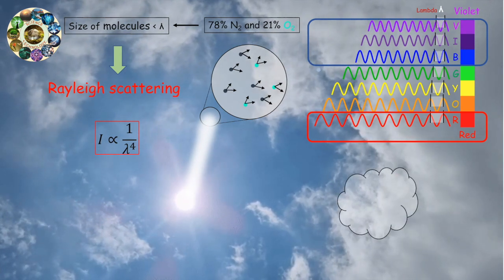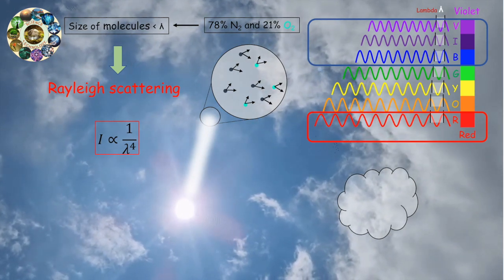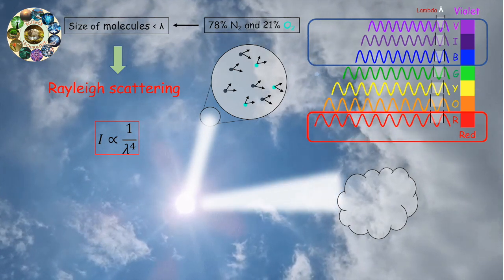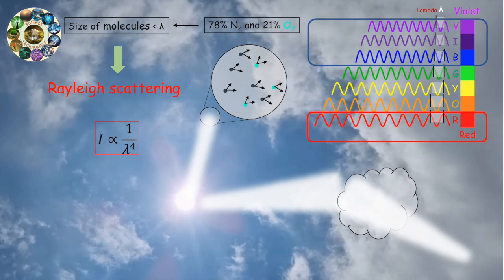Clouds, on the other hand, are made of water droplets that are much larger than the wavelengths of visible light. The way they scatter sunlight is determined by how the light is refracted and internally reflected by, and diffracted around, the cloud droplets.